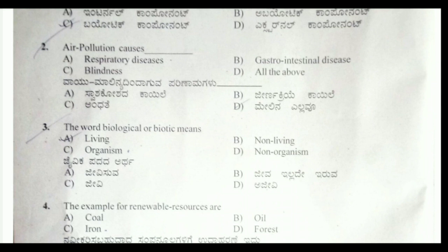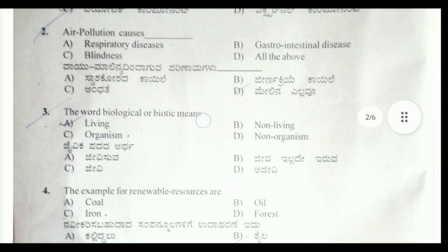Air pollution causes: the correct answer is all of the above — respiratory diseases, blindness, and gastrointestinal disease.